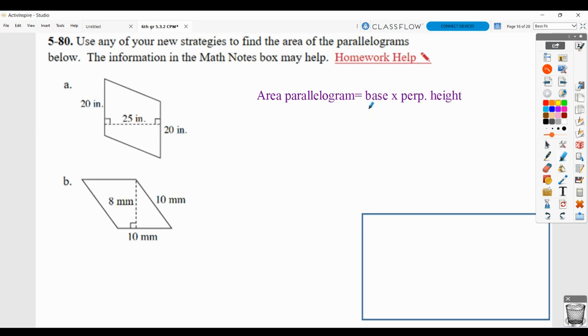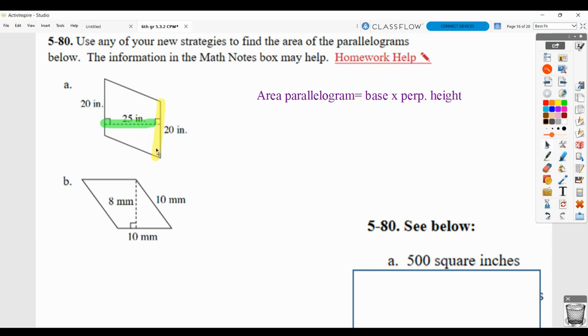One thing to keep in mind is that the base does not have to be on the bottom. So in this problem, the base would actually be 20 because we can see that between the two bases, 20 and 20, that's our perpendicular height. So you would show that you multiplied 20 times 25 and got 500 square inches.